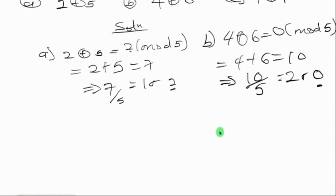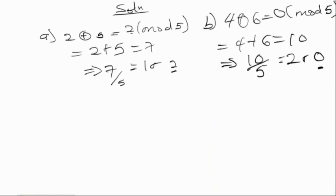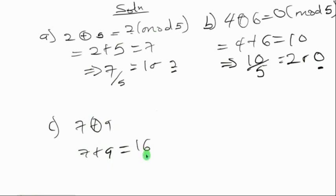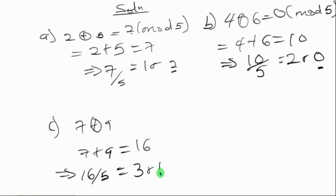For (c): 7 plus 9 in mod 5. That gives 7 plus 9 equal to 16, then 16 divided by 5 gives 3 remainder 1. So the answer is 1 in mod 5.